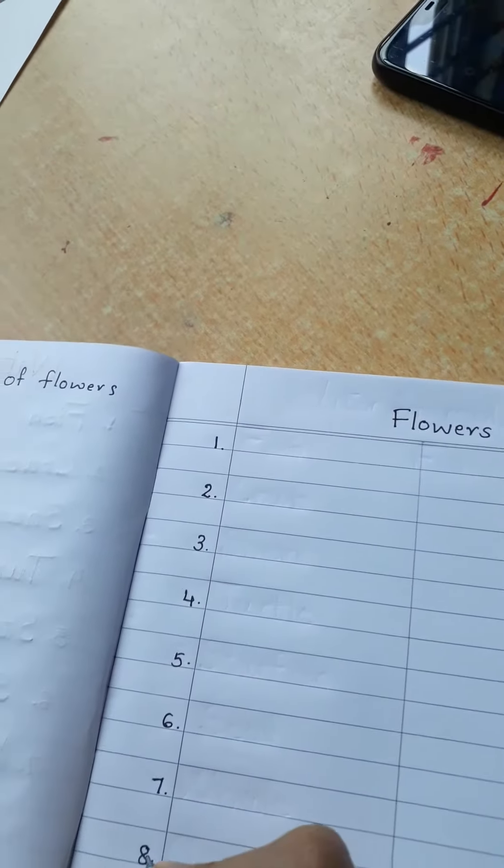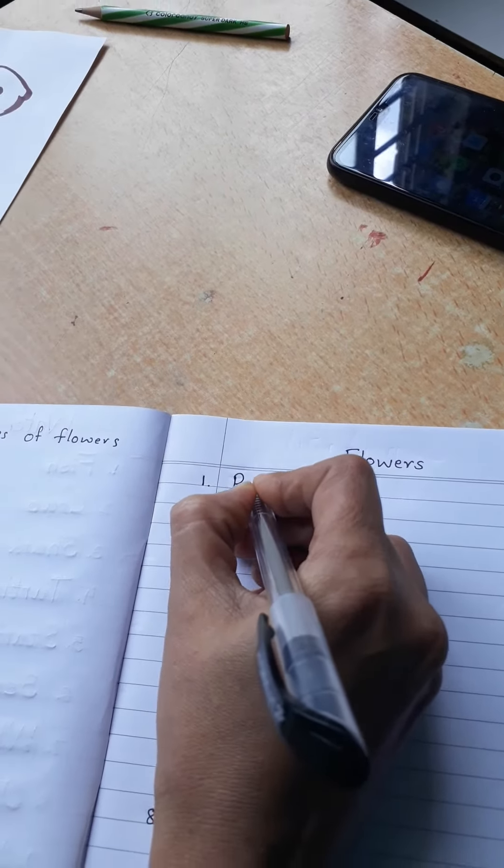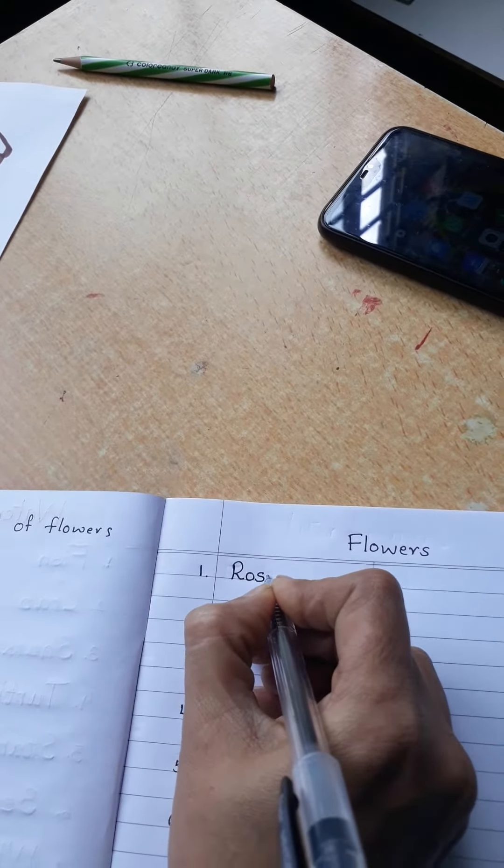First we have to write down the numbers like this. First one is rose. R-O-S-E, rose.